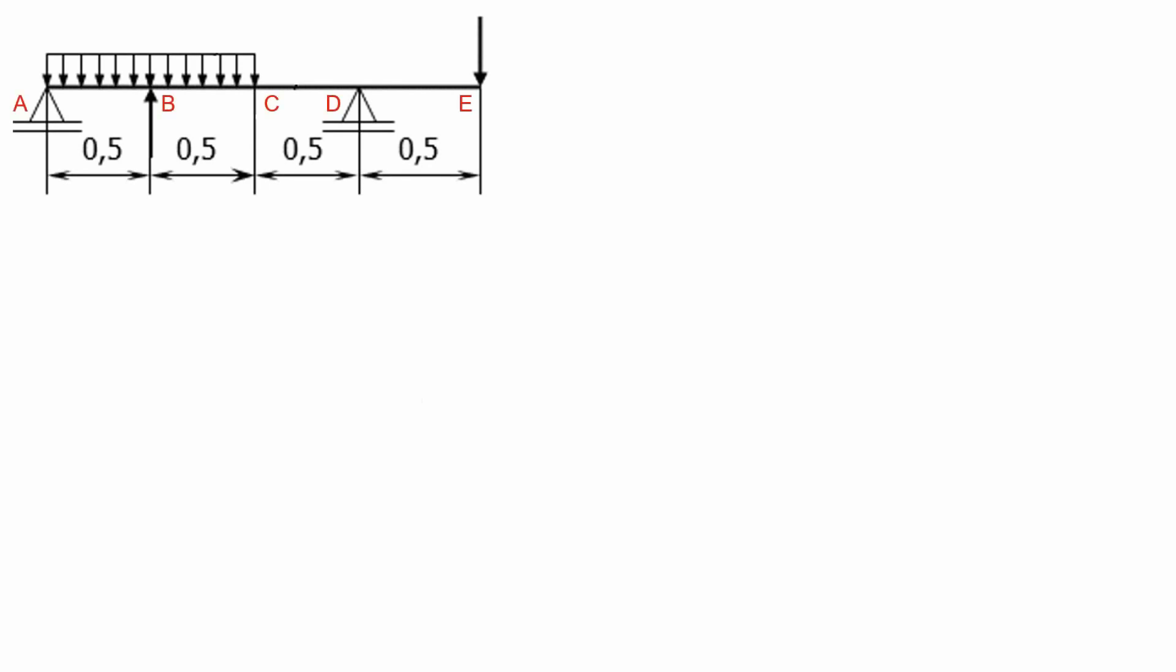After doing that we have to recognize the types of supports on which the beam is fixed and we introduce the specific reactions for every support. In this case there are two roller supports in points A and D. Therefore we will introduce two vertical reactions FA and FD. Next we will write on the beam the remaining loads given by the problem.